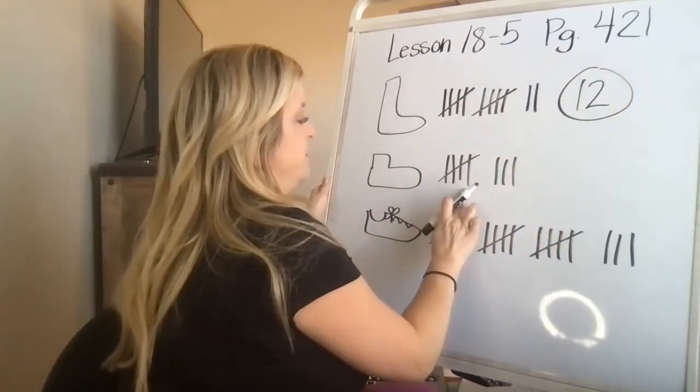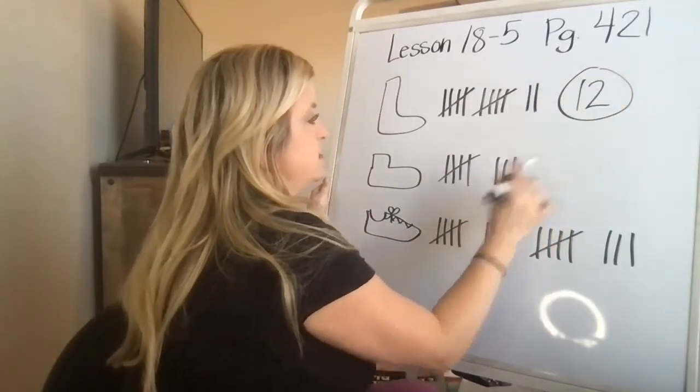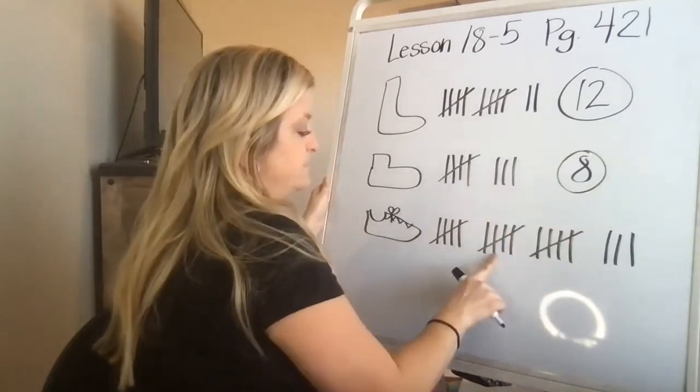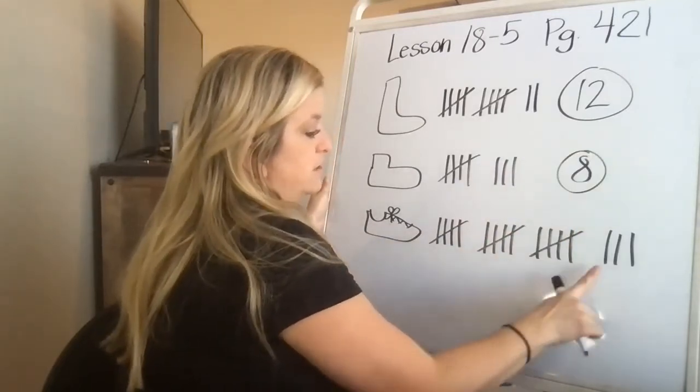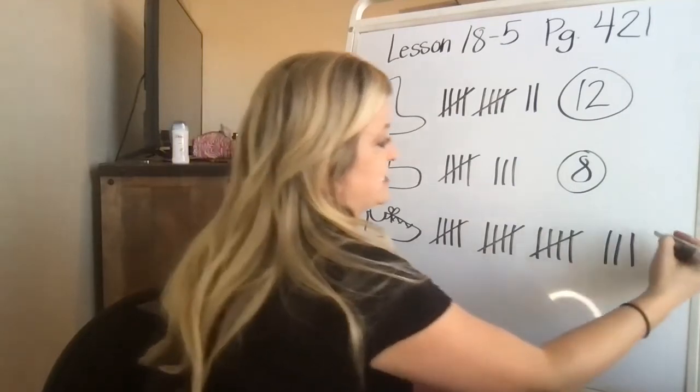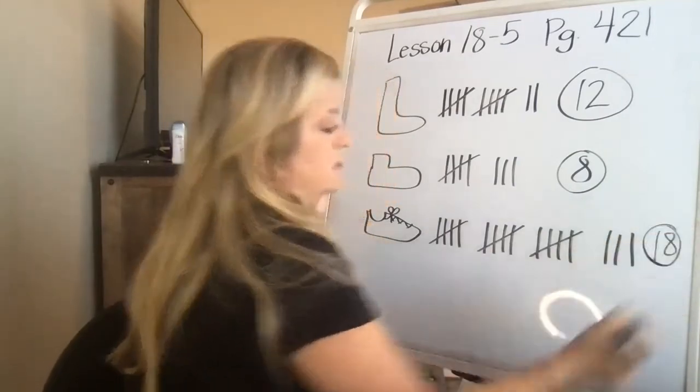So we're going to write down the number because that's what they want you to do outside of the tally chart. So we have five, five, 10, 11, 12. So you would write the number 12. And then you have five, count on six, seven, eight. Five, 10, 15, 16, 17, 18 for the tennis shoes.